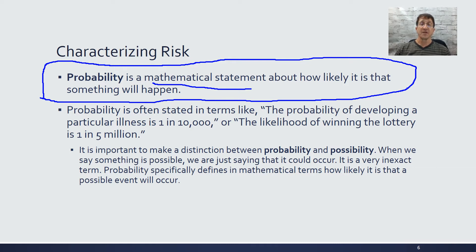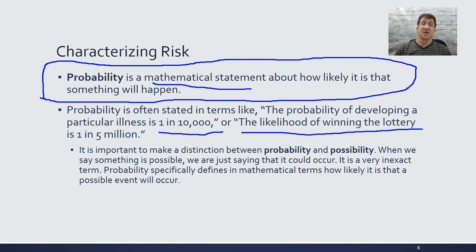Probability comes in numbers. We can look at epidemiological data—the occurrence of a particular illness expressed as one in 10,000, one in 100,000, or one in a million. One example your book uses is winning the lottery: if you play an average national lottery ticket, you could have a one-in-a-million chance of winning, which is very improbable.